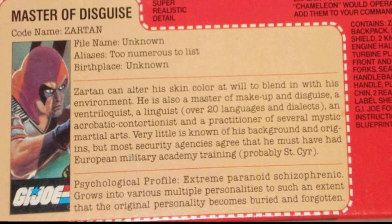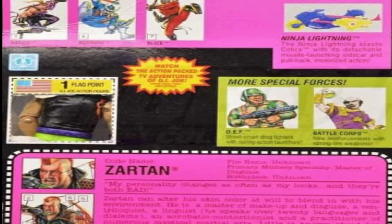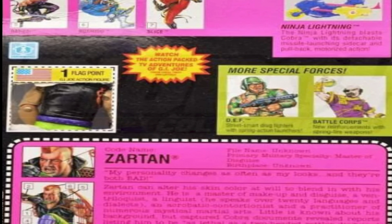On the back of the Swamp Skier box is where we learn a bit about the elusive Zartan. His file card indicates that Zartan has extreme paranoid schizophrenia and also lists multiple personality disorder in his psych profile. While these are mental health disorders, it's easy to see how they would be a benefit to Zartan when embodying somebody else. Despite that benefit, listing these two disorders together proved confusing for fans.